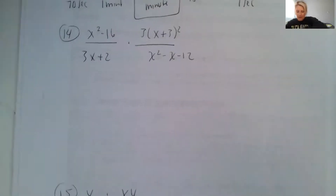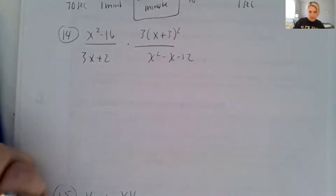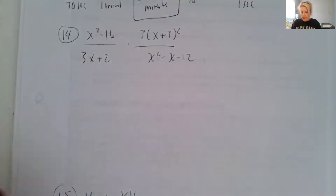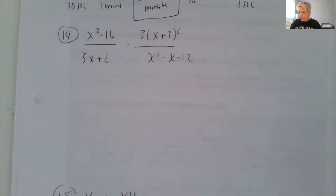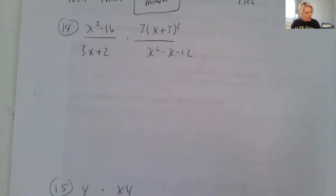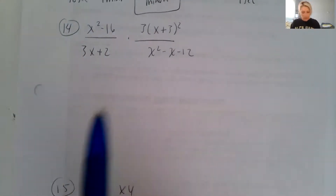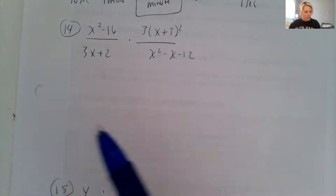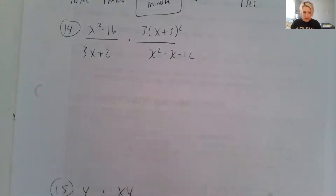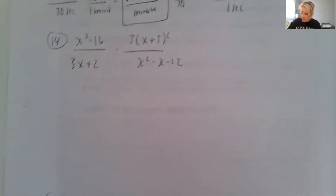Hello, welcome back to the second video for chapter five review. I'm breaking it into pieces just because then you can find the problems that you want help with a little bit quicker. So this is going to be problems 14 through 22, and it's all performing multiplying and dividing of rational expressions.